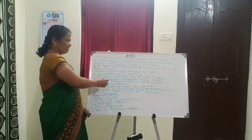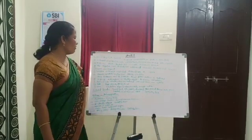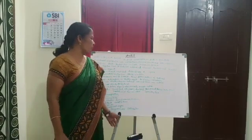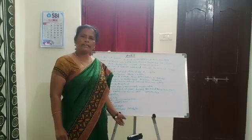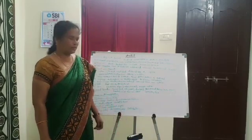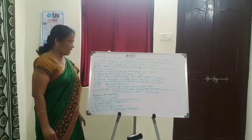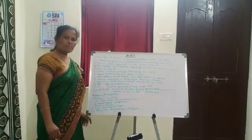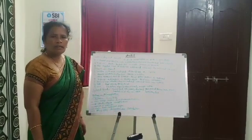The brain is large. Olfactory lobes are reduced. Cranial nerves are twelve pairs. Respiration is by spongy lungs.